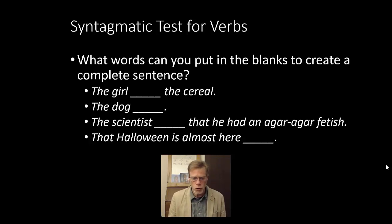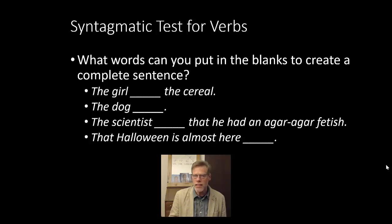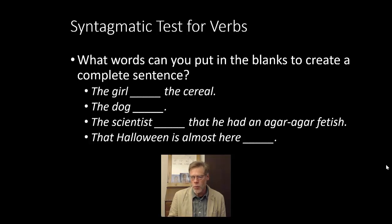Here are syntagmatic tests for verbs — these are subtypes of verbs. For transitive verbs: the girl ate the cereal, the girl bought the cereal, the girl saw the cereal, the girl drank the cereal. For intransitive verbs: the dog barked, the dog slept, the dog walked. For sentential verbs: the scientist thought that he had an auger-auger fetish; the scientist believed that he had an auger-auger fetish; the scientist argued that he had an auger-auger fetish. And the last type tends to be a bit slangy — these verbs take subordinate clauses as their subjects: that Halloween is almost here rocks; that Halloween is almost here rules; that Halloween is almost here sucks.